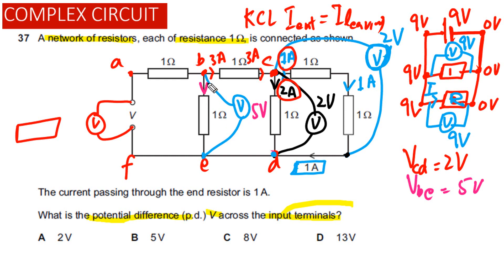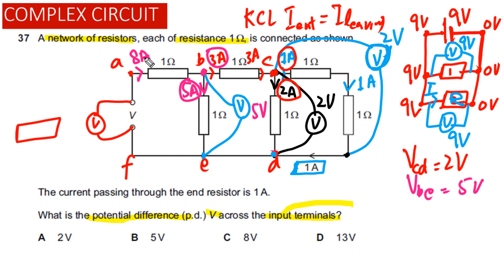Since the potential difference across this resistor is 5 volts and its resistance is 1 ohm, the current passing through it is equal to 5 amps. Looking at the next junction, the current leaving is equal to 5 plus 3 amps, which equals 8 amps. By KCL, the current entering that junction must also equal 8 amps.